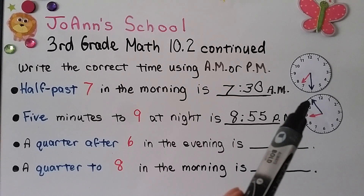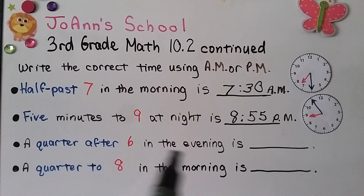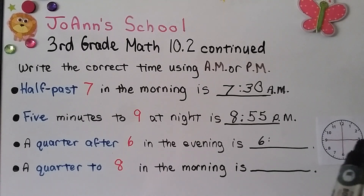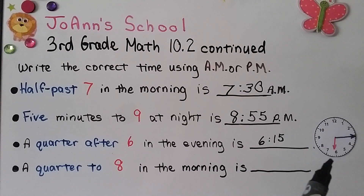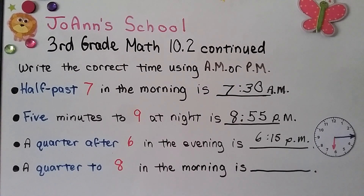This one says a quarter after six in the evening. We know the hour is six. The clock face can be split into four quarters, and if it's a quarter after, the minute hand is pointing to the three — that's 5, 10, 15 minutes. The clock would show the hour hand a little past the six and the minute hand pointing to the three. It says in the evening, so if you said P.M., you're right — it's 6:15 P.M.